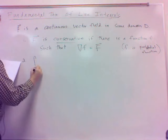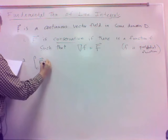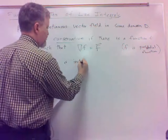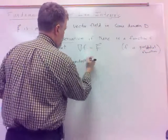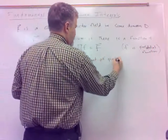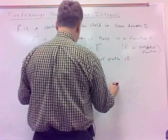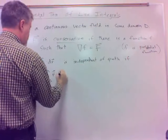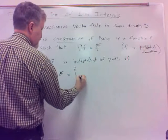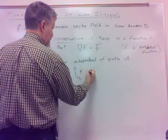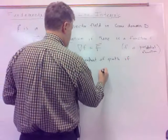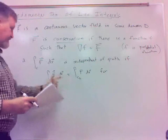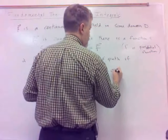Number two: the line integral of vector field F dotted with dr is independent of path if the integral of F dot dr over C1 equals the integral of F dot dr over C2 for any two paths C1 and C2 with the same initial and terminal points. If that's equal for any such paths, it makes sense to call it independent of path.